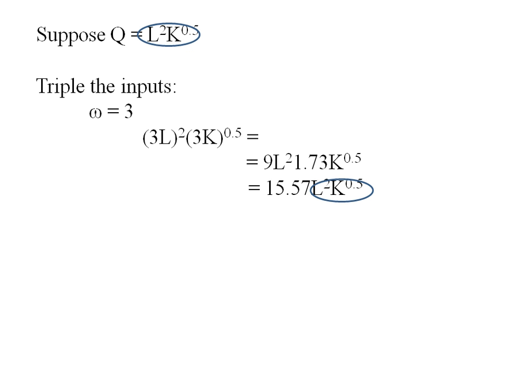What I'm noticing now is I've got L squared K to the 0.5 as part of my original production function. Then I've got a term out in front. So this term out in front is going to be theta. Now I can compare and say well theta is 15.57 and omega is 3. So we definitely have some increasing returns to scale here.